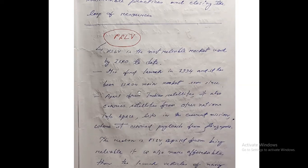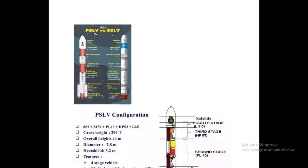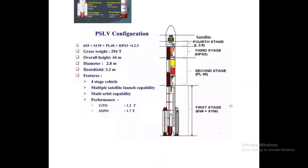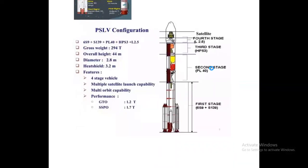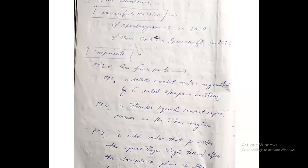Comparing PSLV versus SSLV: PSLV has a greater height of 44 meters and larger diameter, with four stages, while SSLV has fewer stages. An important configuration point is that PSLV has first, second, third, and fourth stages. Successful missions launched by PSLV include Chandrayaan-1 in 2008 and the Mars Orbiter Spacecraft in 2013.